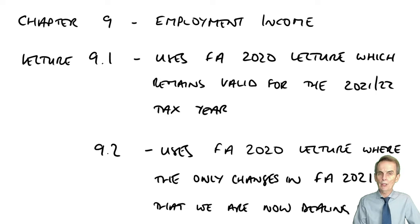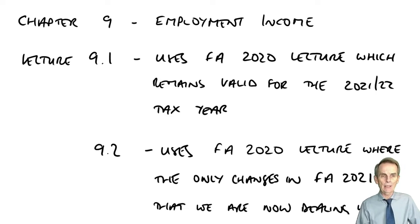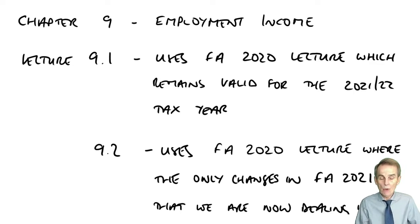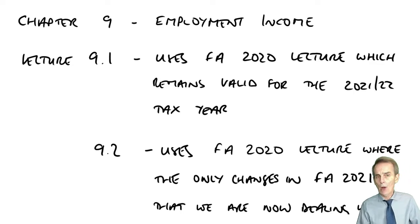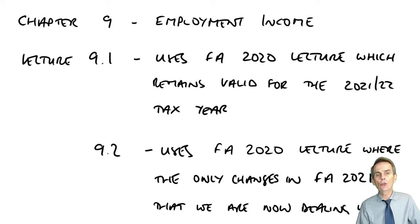It wasn't always a profit that we were dealing with. In Chapter 7, we looked at what we could do with a tax-adjusted trading loss. If it arose for an accounting period, we saw that there would be a nil assessment arising for the tax year of assessment, but then a variety of different reliefs available to the sole trader or the partner in a partnership as regards their share of the tax-adjusted trading loss.